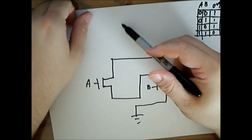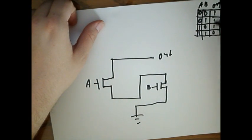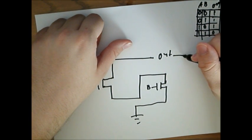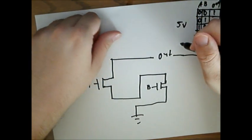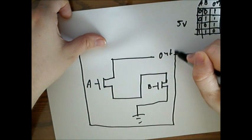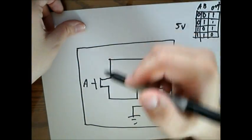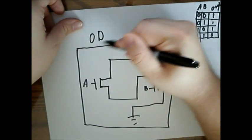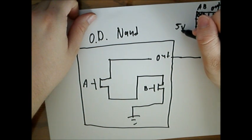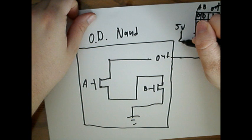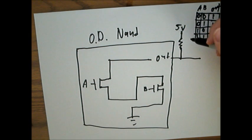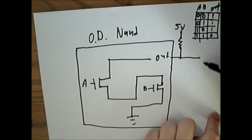But the thing is, we don't have any power to supply these ones. So in order to do that, we have to supply the power from the outside — outside the gate. So pretend this is our gate. We have our 5-volt node here, followed by a resistor to prevent any shortages — a pull-up resistor. And now this will be our new output.